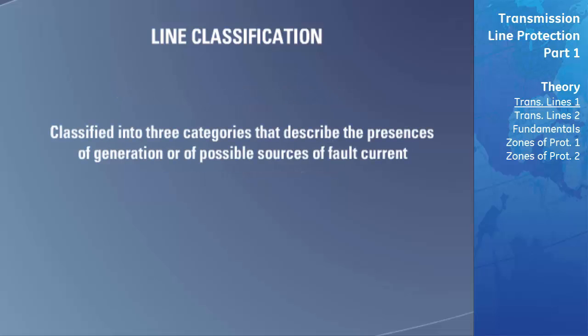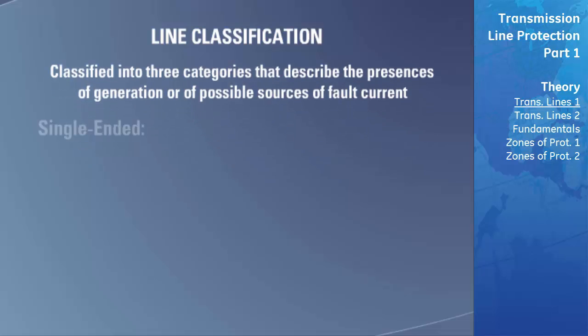Transmission lines are classified into three categories that describe the presence of generation or possible sources of fault current that might be found at the transmission line's boundaries. These are single-ended, double-ended, and multi-ended.